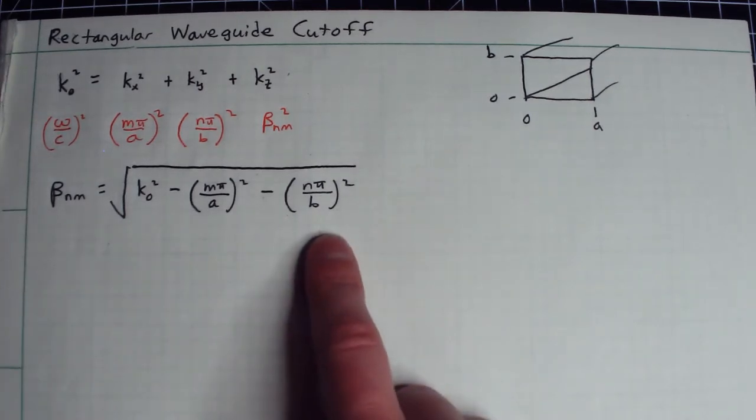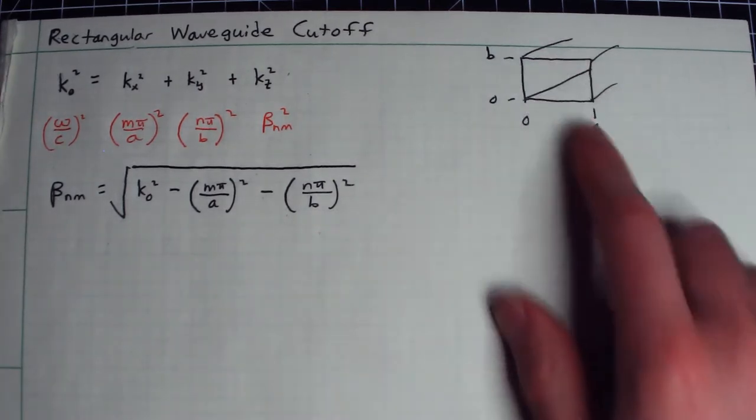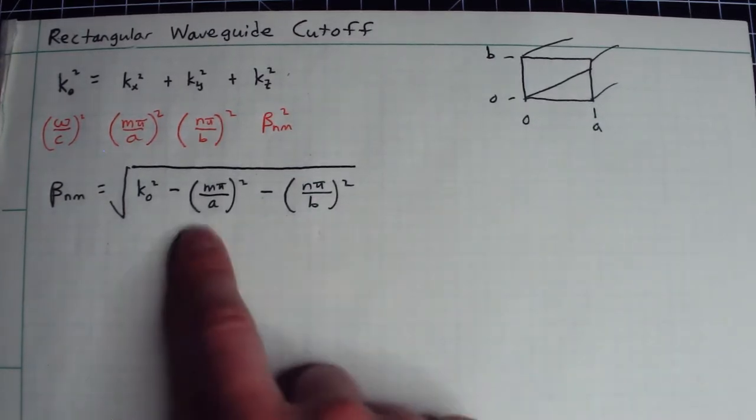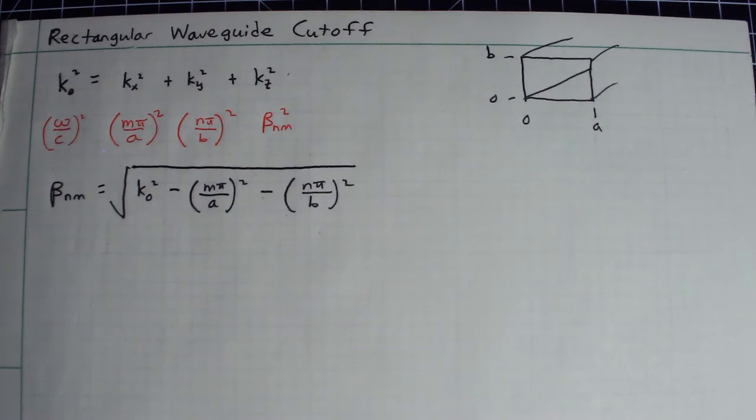Okay, and we found we would get something like the following. So you get k naught squared minus m pi over a squared minus n pi over b squared. And then you would take the square root of all of that. Okay, so this should look pretty familiar. We did all this with the parallel plate waveguide. When we added the extra dimension on the rectangular waveguide, we just got this extra mode number between m and n.